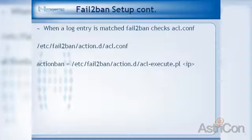When a log entry is matched, Fail2Ban calls a file in the action.d directory called 'acl.' The action 'ban' calls a Perl script. You can also have an action to unban, so you can dynamically add and remove ACLs. The script is passed the variable IP from the host field in the failed registration attempt.